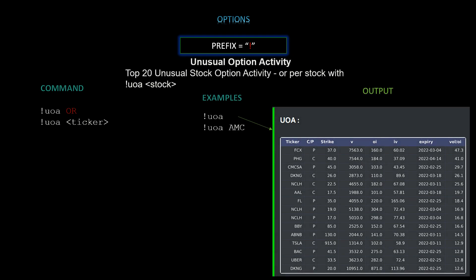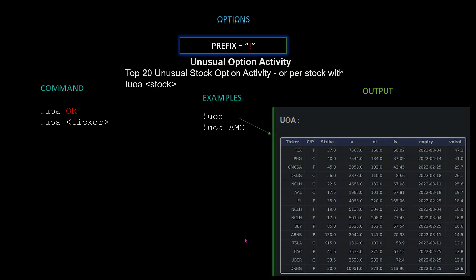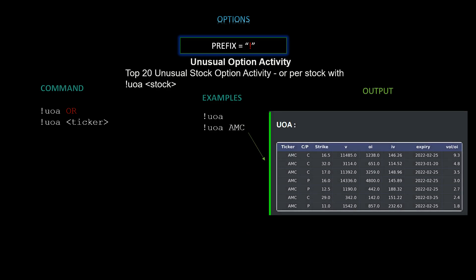Next we have unusual options activity — displays the top 20 unusual stock option activity, or per stock using `!uoa [ticker]`. Using `!uoa` by itself gives a consolidated view of unusual options activity. Using it with a specific ticker like AMC shows the calls and puts, the strike, volume, open interest, IV, expiry, and the volume-to-OI ratio.